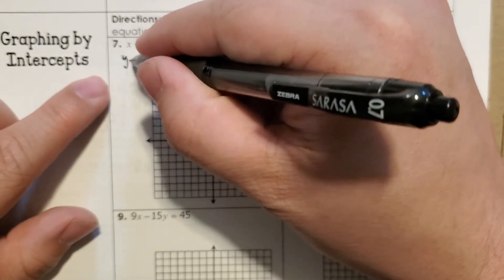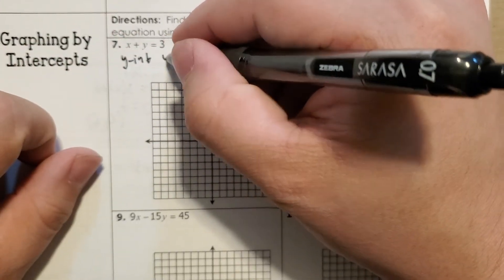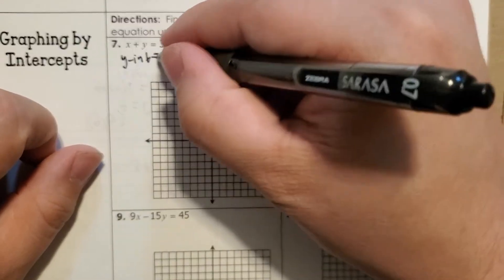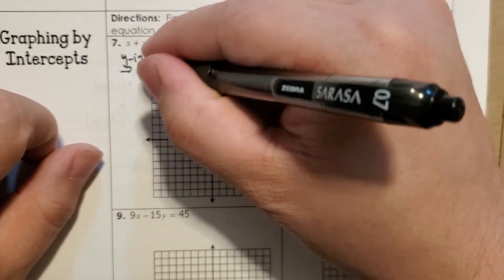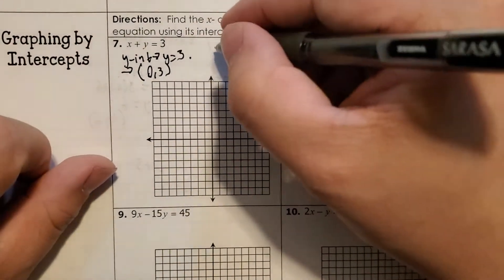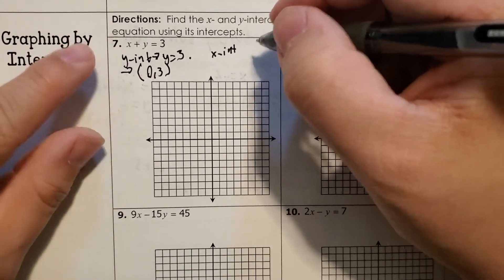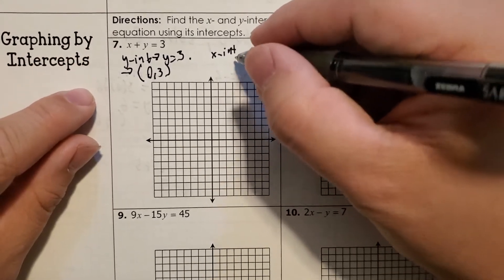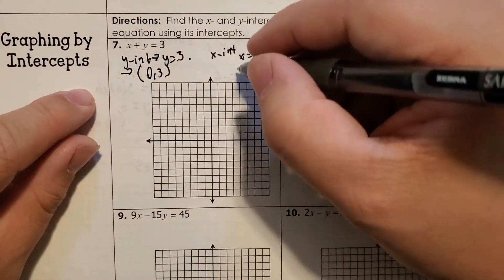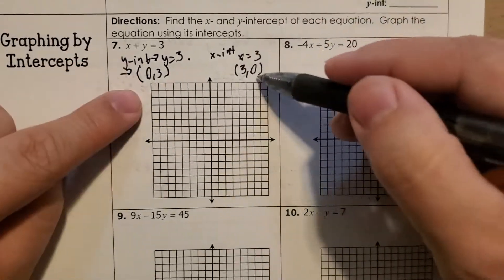So y-int is 0 plus y equals 3. So that's at y equals 3. So that means we have the point 0, 3 as one of the points on our line. And then our x-intercept, we're going to make y equals 0. So then we have x equals 3. And then that gives us the point 3, 0. We have two points.